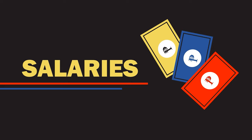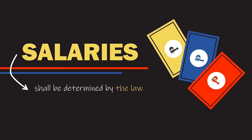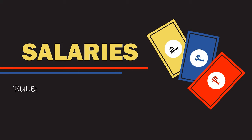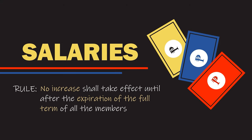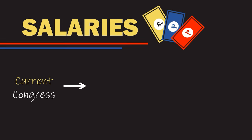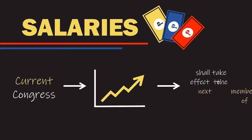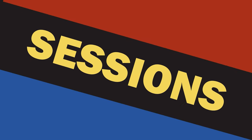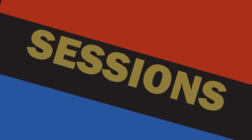Here is the rule on salary increase: no increase in their salaries shall take effect until after the expiration of the full term of all the members. For example, if the present Congress increases the salaries of their members, the increase shall take effect for the next members of Congress.